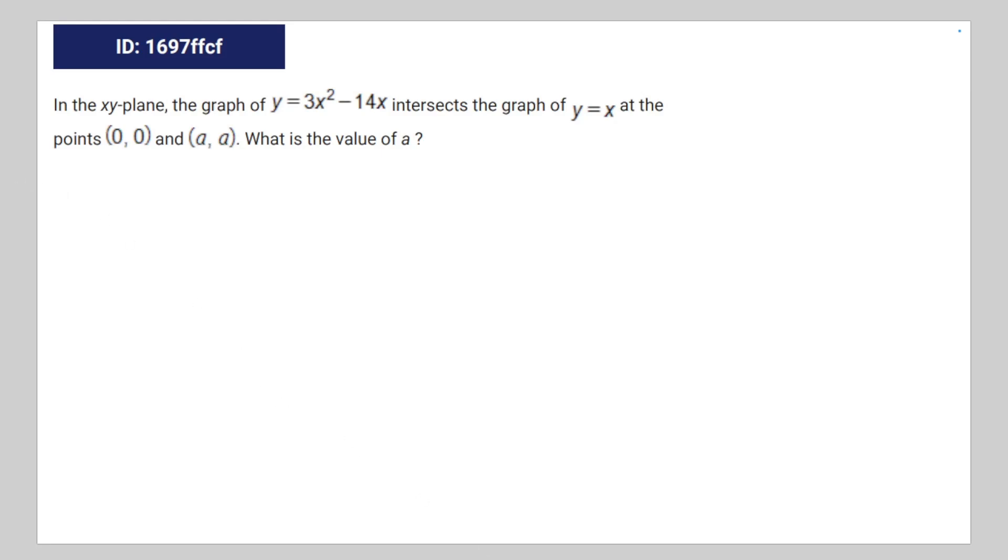Alright, so we're given the following math question. In the xy-plane, the graph of y = 3x² - 14x intersects the graph of y = x at the points (0, 0) and (a, a). What is the value of a?